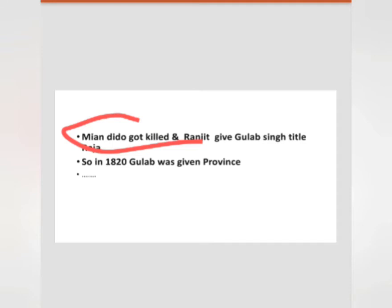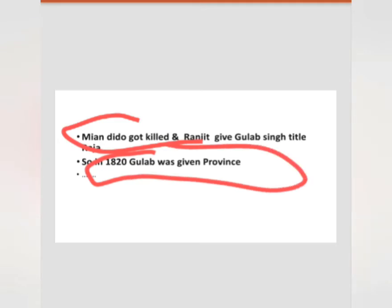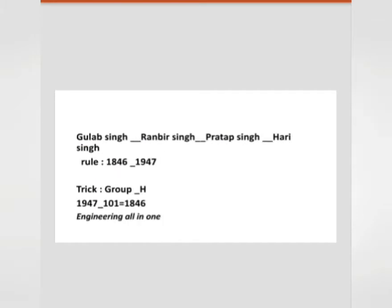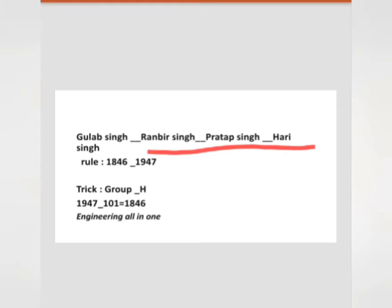In 1820, Gulab Singh was given a province. Various rulers came after him: Gulab Singh was the first Dogra ruler, then came Rambir Singh, Pratab Singh, and Hari Singh.